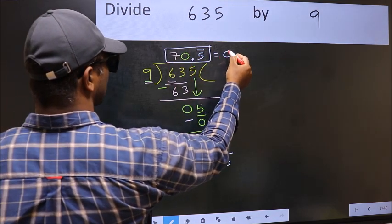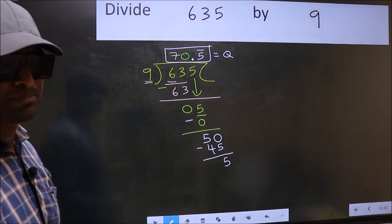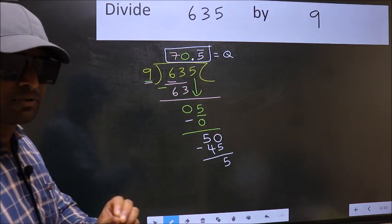So this is our quotient. Did you understand where the mistake happens? You should not make that mistake.